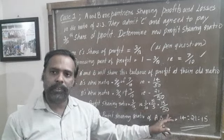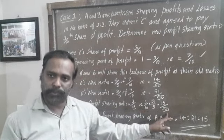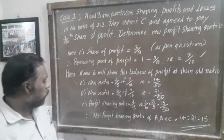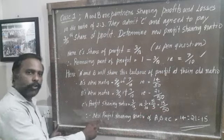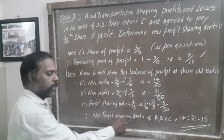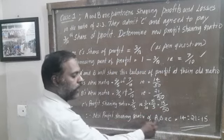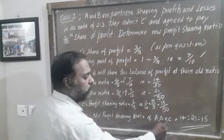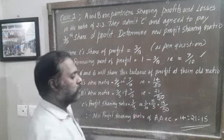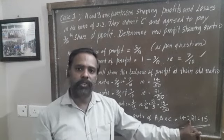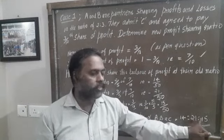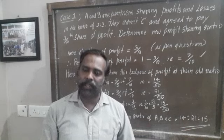So we got C's new profit sharing ratio as 15/50. Therefore, the new profit sharing ratio of A, B, and C is equal to 14:21:15.